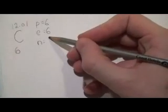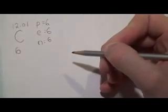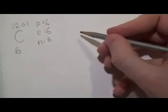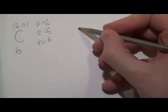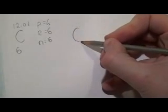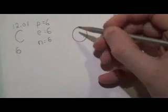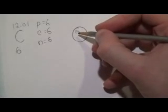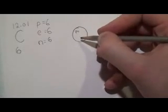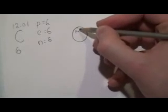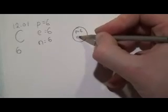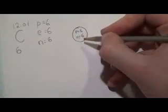and we have 6 neutrons. So the first step in drawing a Bohr diagram is we draw the nucleus. So here's a nice circle for the nucleus, and inside the nucleus, as you know, is only the protons and the neutrons. So we have 6 protons and we have 6 calculated neutrons for the nucleus of carbon.